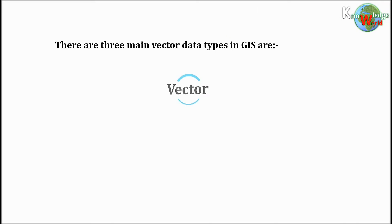There are three main vector data types in GIS: Number 1, points. Number 2, lines. Number 3, polygon.